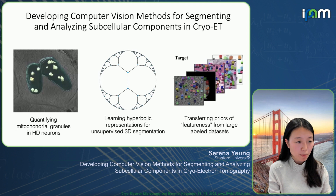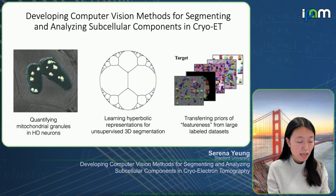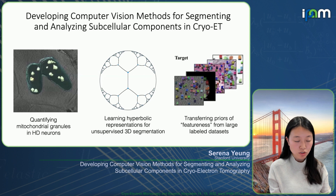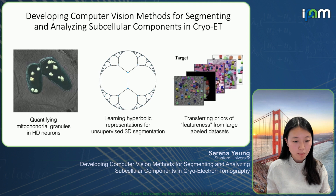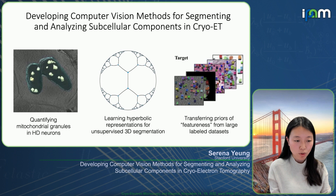In summary, I've talked about first, our work using semi-supervised methods to analyze specific subcellular components of interest in Huntington's disease neurons, and how we can use that to obtain quantitative insights that we wouldn't be able to get with just manual inspection. Then I talked about ongoing work pushing our methods further to reduce annotation needs — from semi-supervised to fully unsupervised segmentation — which has benefits both in label efficiency and in targeting a diverse range of features for which we don't have or don't want label data.